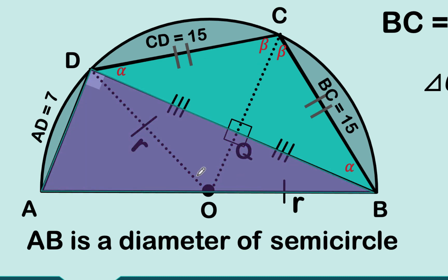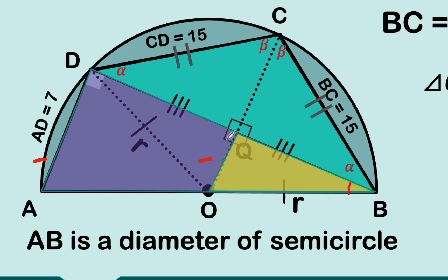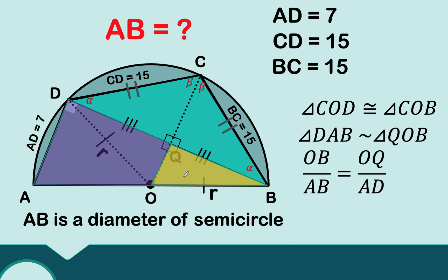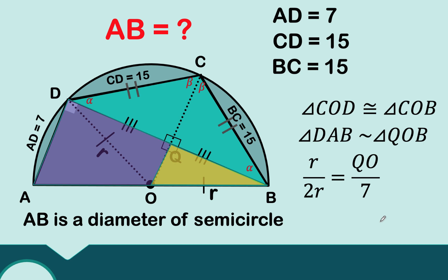Now look at the purple right triangle and the yellow right triangle. They share the same acute angle B, and both have right angles, so their third angles are also equal — making these two triangles similar. When two triangles are similar, their corresponding parts are proportional. The proportion we form is: OB over AB equals OQ over AD. OB is R, AB is 2R, and AD is 7. So R divided by 2R equals 1/2, which gives us OQ equal to 7/2. This line segment is 7/2.